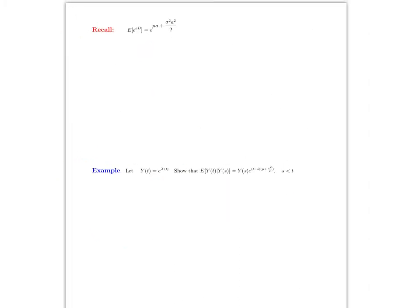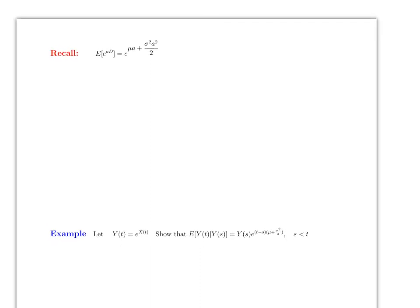We'll need this formula many times: if D is a normal distribution with mean μ and variance σ², then E[e^(aD)] = e^(aμ + σ²a²/2), where a is a constant. You've seen this formula multiple times.